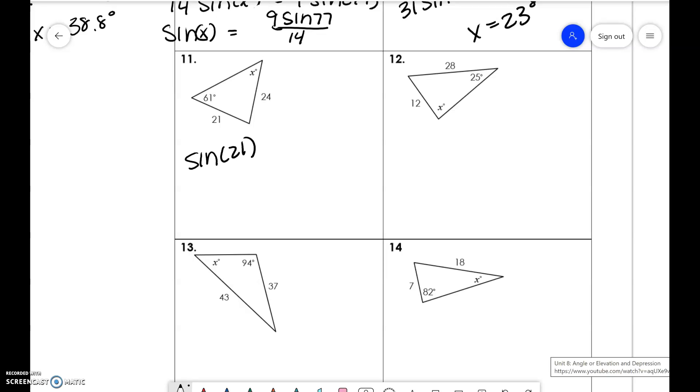Sine of x over 21 is equal to sine of 61 over 24. So 21 sine of 61 divided by 24, take sine inverse of that decimal, and you're going to get x to be 49.9.